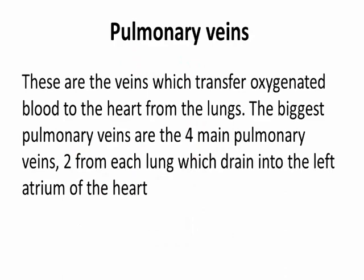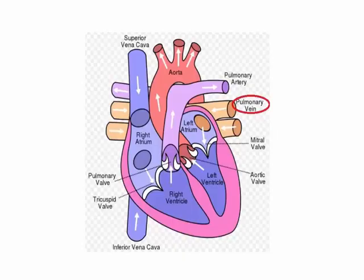Pulmonary veins. These are the veins which transfer oxygenated blood to the heart from the lungs. The biggest pulmonary veins are the four main pulmonary veins, two from each lung, which drain into the left atrium of the heart.